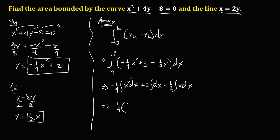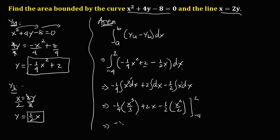Integrating: negative one-fourth times x cubed over 3, plus 2 times x, minus one-half times x squared over 2. This simplifies to negative x cubed over 12 plus 2x minus x squared over 4, evaluated from negative 4 to positive 2.